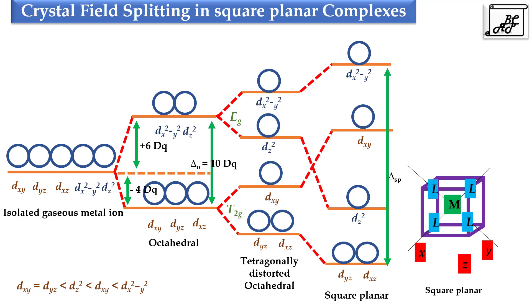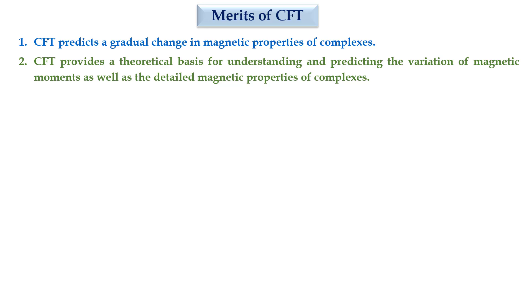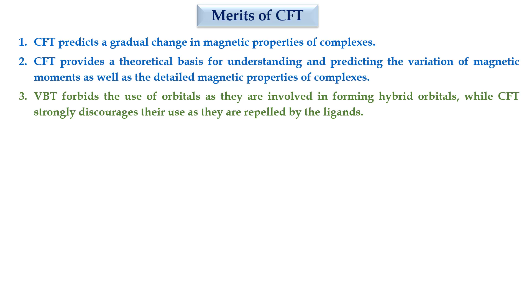This was all about crystal field splitting. Let's see the merits or advantages of CFT. Crystal field theory predicts a gradual change in the magnetic properties of the complexes. Second, CFT provides a theoretical basis for understanding and predicting the variation in magnetic moments as well as the detailed magnetic properties of complexes. Third, in case of valence bond theory, it forbids the use of orbitals as they are involved in forming hybrid orbitals, while crystal field theory strongly discourages their use as they are repelled by the ligands.